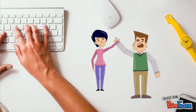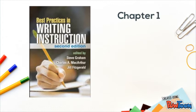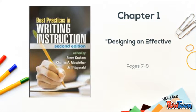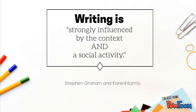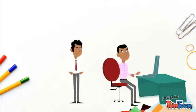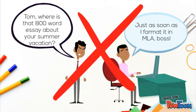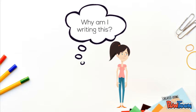As Stephen Graham and Karen Harris describe in their chapter, 'Designing an Effective Writing Program,' through best practices in writing instruction, writing is strongly influenced by the context in which it takes place, and is a social activity involving an implicit or explicit dialogue between writers and readers. In both of these situations, the essay has little context. In fact, the essay's only context is in school.